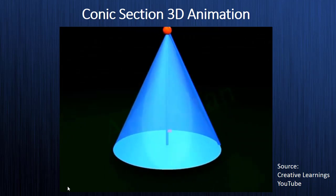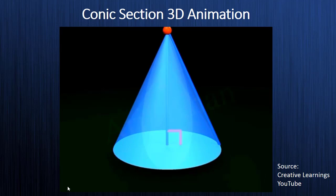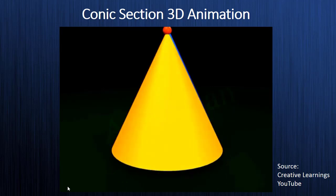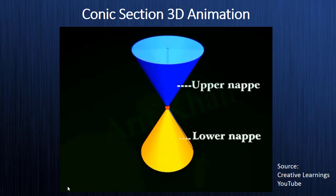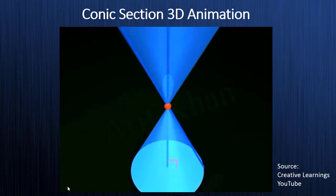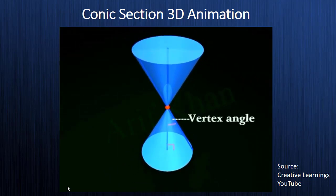A right circular cone has a circular base, and its axis is always a perpendicular line from the center of the base to the vertex. The perimeter of the base is called the directrix. The lateral surface of a right circular cone is called a nappe. A double right circular cone has two nappes — the nappe above the vertex is called the upper nappe and that below the vertex is called the lower nappe. The angle between the generator and the axis is called the vertex angle.